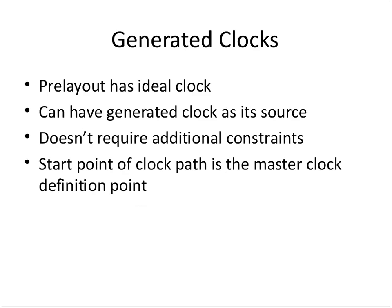Now let us come to generated clocks. Generated clocks are based on a master clock — a generated clock can be generated from either a master clock, a primary clock, or even from another generated clock. A generated clock does not require any additional constraints such as clock latency and uncertainty, because everything will be derived from the master clock itself. The start point of the clock path is the master clock definition point.